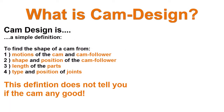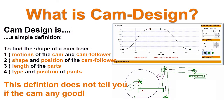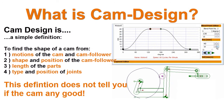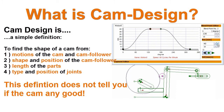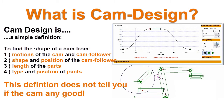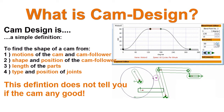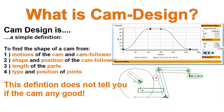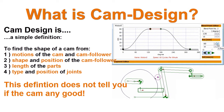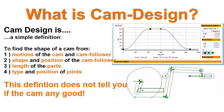What is cam design? A simple definition is to find the shape of a cam. We must find the shape from the motion of the cam and cam follower, the shape and position of the cam follower, the length of parts, and the type and position of joints.